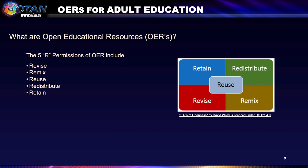In order for a resource to be considered a true OER, it has to contain five permissions. These include the right to revise a resource, the right to remix a resource, the right to reuse a resource, the right to redistribute or share a resource, and the right to retain a copy of that resource — whether stored on your computer or downloaded and printed. These are the five R's that should be part of an OER.